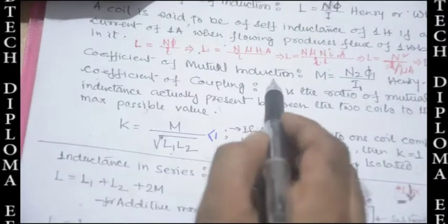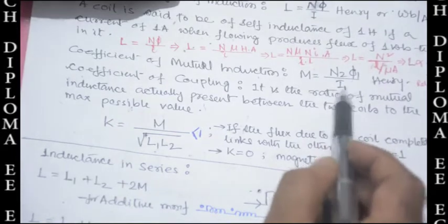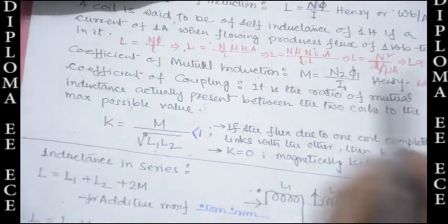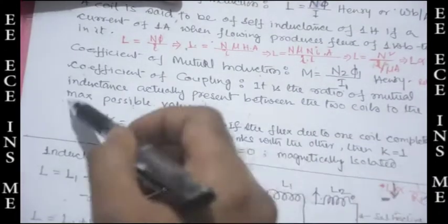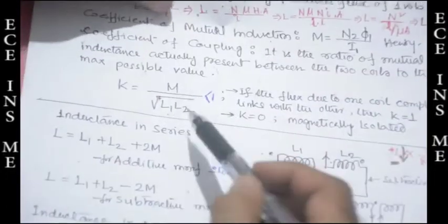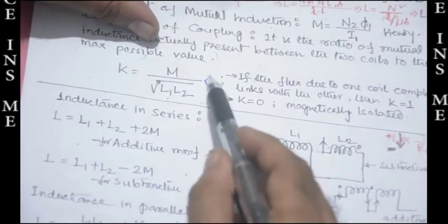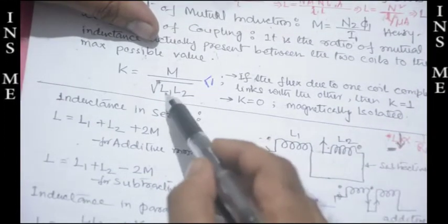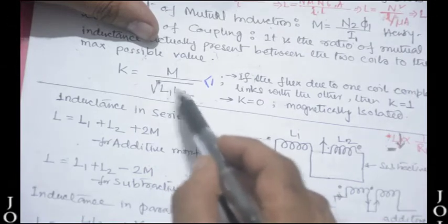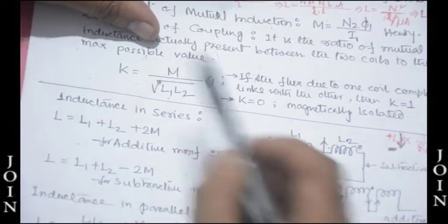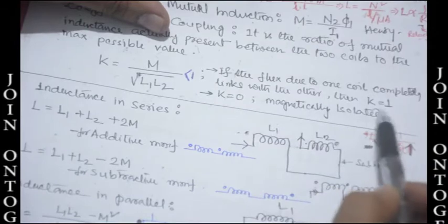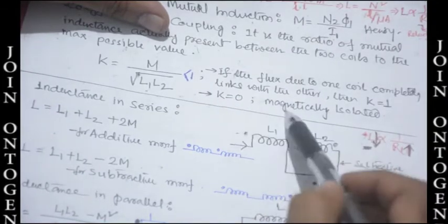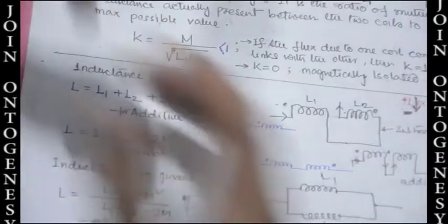Coefficient of mutual induction: M = N₂φ₁ / I₁, in Henry. Coefficient of coupling is the ratio of mutual inductance actually present to the maximum possible value. K = M / √(L₁ · L₂), and it is always less than 1. If the flux due to one coil completely links with the other, K = 1. If K = 0, the coils are magnetically isolated with no magnetic coupling.